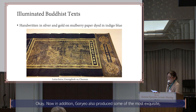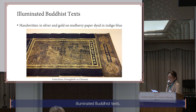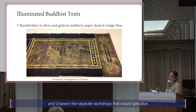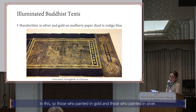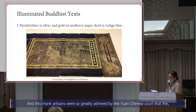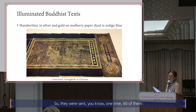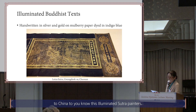In addition, Koryo also produced some of the most exquisite illuminated Buddhist texts. These are handwritten, written in silver and painted in gold. The government established separate workshops that specialized in this — those who painted in gold and those who painted in silver. These monk artisans were so greatly admired by the Yuan Chinese court that the Chinese requested on six occasions a dispatch of Sutra monks to be sent to China — one time 60 of them and another time 100 — these illuminated Sutra painters were very greatly admired at the time.